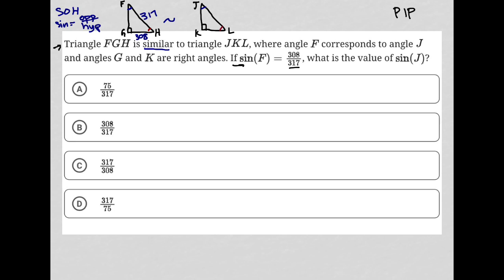What else do we know when we're told two triangles are similar? We also know that their side lengths are proportional — they're always a multiple. This is determined by whether it's a multiple of a whole number or a fraction. So KL could be 308 times some whole number like 2, 3, or 4, or it could be 308 times a half or a third — smaller than 308, but still a proportional multiple.